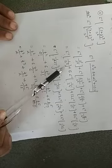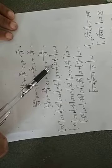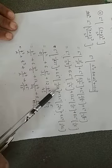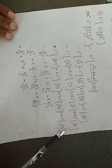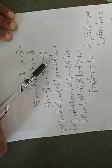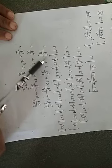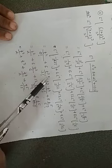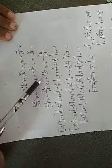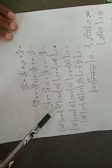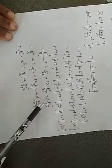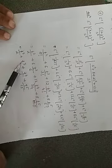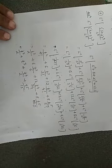Now, s cubed upon s to the 6 is in the form 1 upon s to the power n plus 1, where n plus 1 is 3, so n is 2 — giving t squared upon 2 factorial. The 6s squared term gives t cubed upon 3 factorial with coefficient 6. The 12s term gives t raised to 4 upon 4 factorial with coefficient 12. The 8 term gives t raised to 5 upon 5 factorial with coefficient 8. Simplify the factorials and that will be the answer for the given problem.